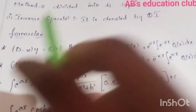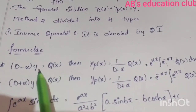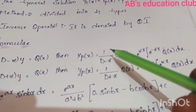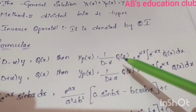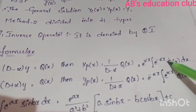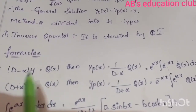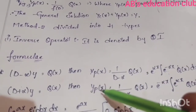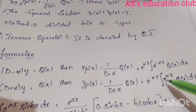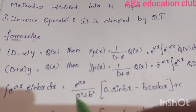For the equation (D − α)y = Q(x), once yc(x) is found via f(m) = 0 and its roots, we find the particular integral yp(x) = [1/(D − α)]·Q(x). The formula gives: [1/(D − α)]·Q(x) = e^(αx) · ∫e^(−αx)·Q(x)dx. For (D + α)y = Q(x), similarly yp(x) = e^(−αx) · ∫e^(αx)·Q(x)dx.